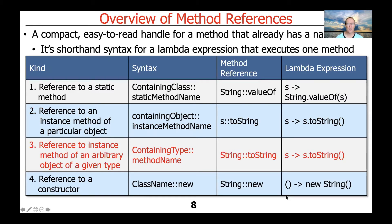Yet another way is to refer to an instance method of an arbitrary object of a given type. Now we're not specifying a particular object s — we're simply saying whatever object we happen to be dealing with in this context, which is always known by the compiler and runtime system. You say ClassName::instanceMethodName, like String::toString. It's not static, it requires an object, but we don't care what the specific object is. The lambda s -> s.toString() is a bit more specific, whereas the method reference lets you be more generic.